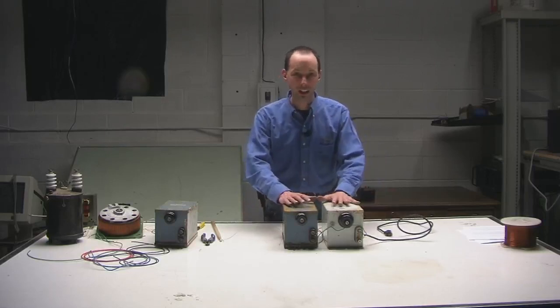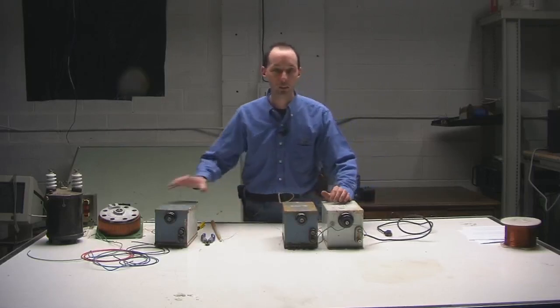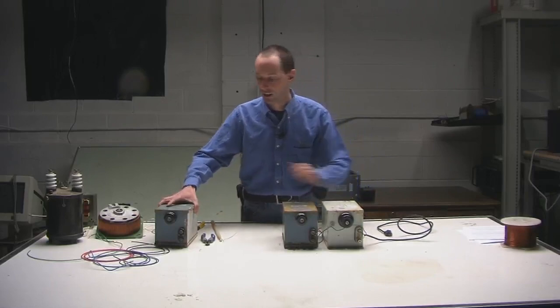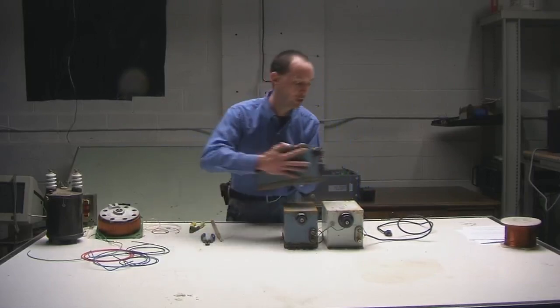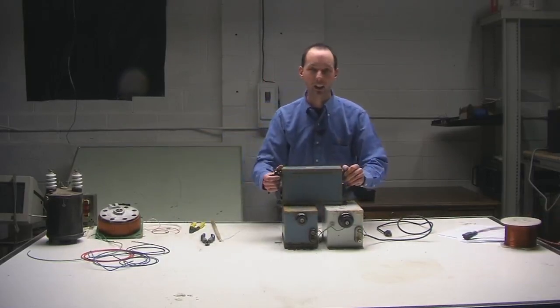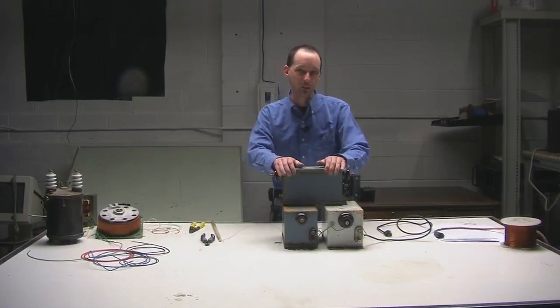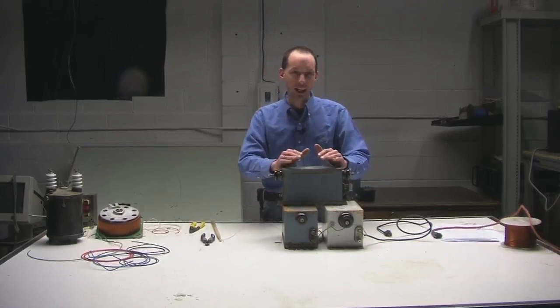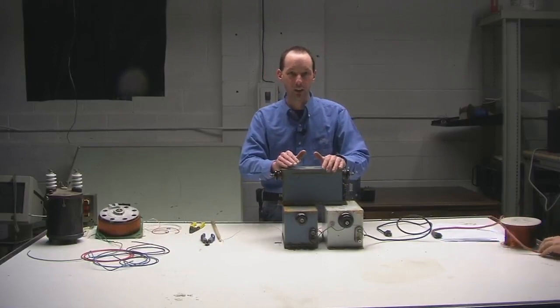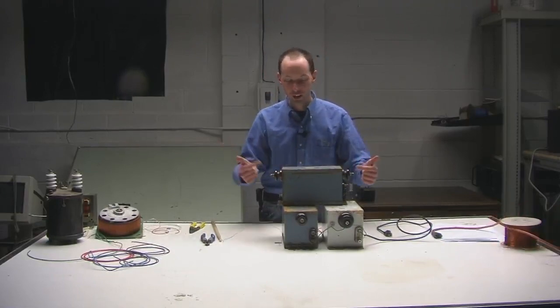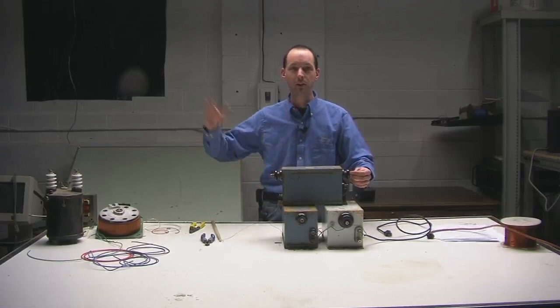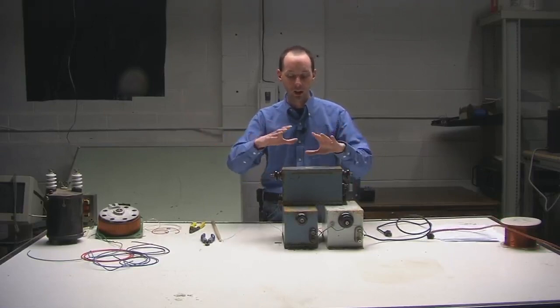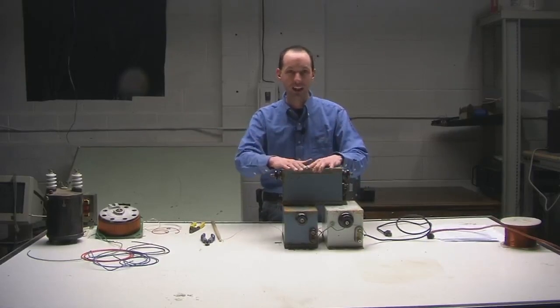When you pick up a neon sign transformer, as you will often be wont to do, they're heavy. They're very dense. They're full of tar and iron and copper and magic strawberry goodness. Don't ever pick up any piece of high voltage equipment by its insulators. It doesn't matter if it's a little neon sign transformer or a 50 kilovolt pole pig. There are proper places to lift anything.